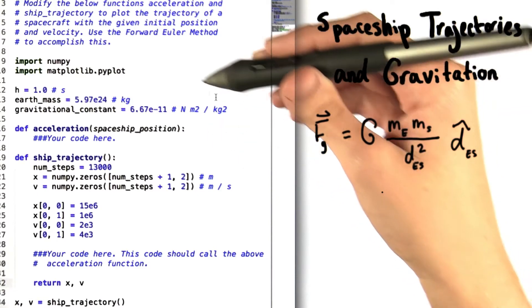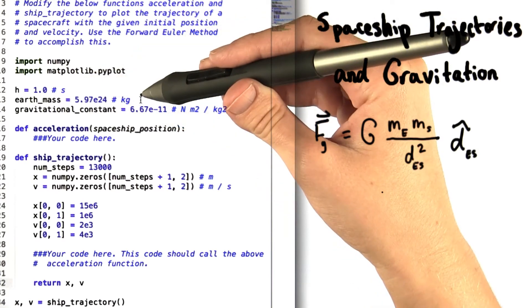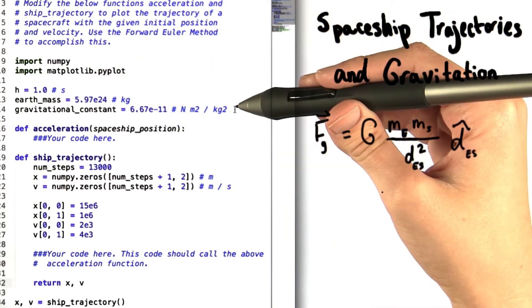We've started you out with some helpful information. We've set the step size to one second, told you the mass of the Earth, and given you the gravitational constant.